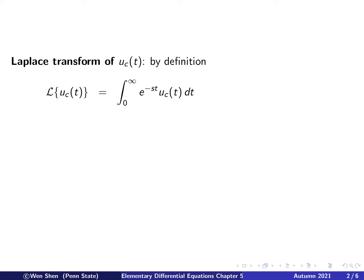By definition of the Laplace transform, we can easily do this calculation. The Laplace transform of uc of t is the integral of the function with the exponential kernel e to the negative st dt. Using the definition of uc of t, which says it will be 0 for t less than c, we can simply integrate from c to infinity instead of 0, because for t less than c it's 0, we can drop that. For t bigger than c it's 1, so we put 1. We just have an integration of an exponential function.